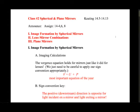We talked last Tuesday about image formation by spherical mirrors, and again we mentioned that the vergence equation works for mirrors just like it did for lenses. The only important thing to keep in mind is that the sign convention is incredibly important—it's a little tricky now because the light reflects off a mirror. V equals U plus P is still the most important equation of the year, and you'll see it a lot again this semester.